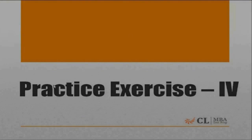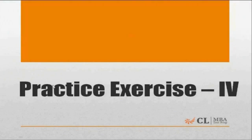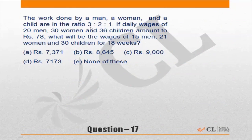That is exercise 4 of the Time Speed Distance funda book. Let's go through the question: work done by a man, woman, and child is in the ratio of 3 to 2 to 1. Daily wages of 20 men, 30 women, and 36 children amount to rupees 78. What will be the wages of 15 men, 21 women, and 30 children for 18 weeks? Let us look at solving this question by two or three different methods.